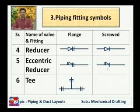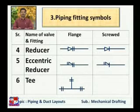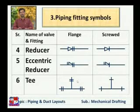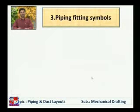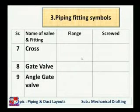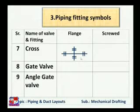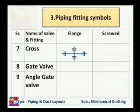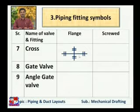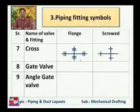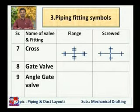To draw a Tee joint, its specific symbol is used. If it is a flanged Tee, two lines are drawn; if it is a screwed joint, one line is drawn at each end of the Tee symbol. Next is the cross — if two pipelines cross each other, they may be at a certain angle; in this case at a right angle. If joined with flanged coupling, two lines are drawn at each end; if screwed, one line is drawn at each end.